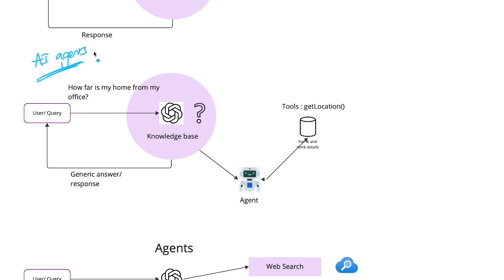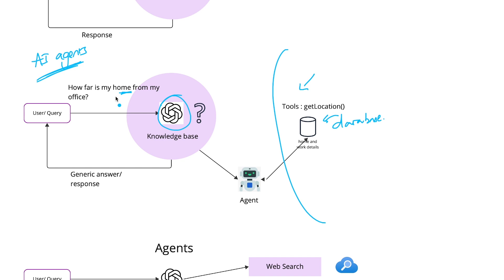AI agents are nothing but software entities that use AI techniques to autonomously perform certain tasks or make decisions on behalf of the user. In this example, the AI agent is designed to interact with the environment — the environment being external tools like databases. This database, readily available to the agent, includes all the home and work details of the individual. As soon as the LLM understands the intent of the query, it autonomously invokes this specific database, gets the details from it, and parses out a proper, accurate response back to the user. That's how AI agents are helpful.